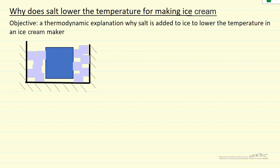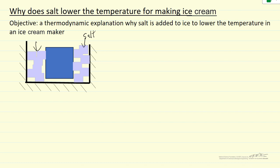Here I'm going to give a thermodynamic explanation as to why we add salt to ice in an ice cream maker — we can lower the temperature and therefore allow us to make ice cream. In simple representation, we have ice cubes and what we're going to do is add salt on both sides, all the way around.